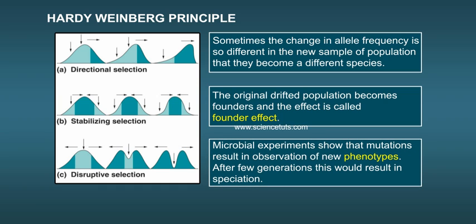Microbial experiments show that mutations result in observation of new phenotypes. After a few generations, this would result in speciation.